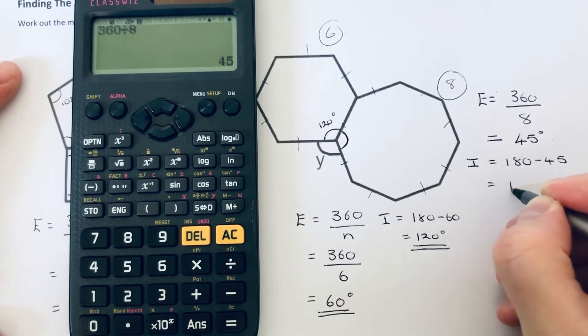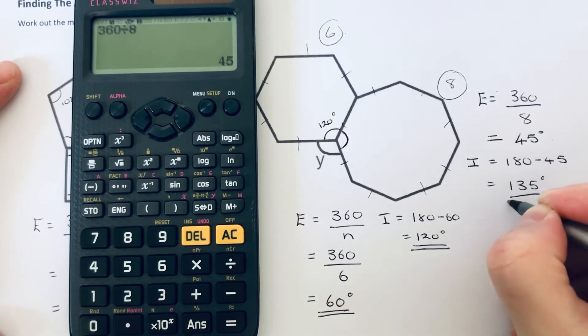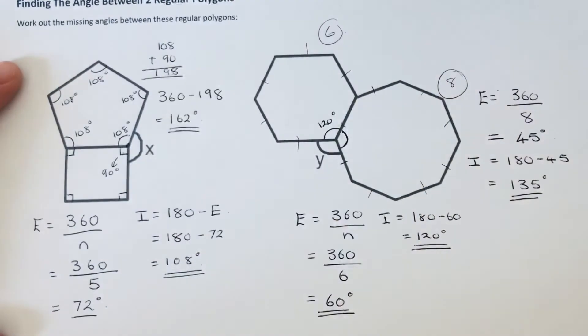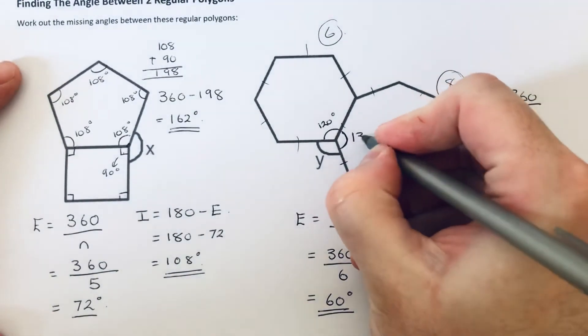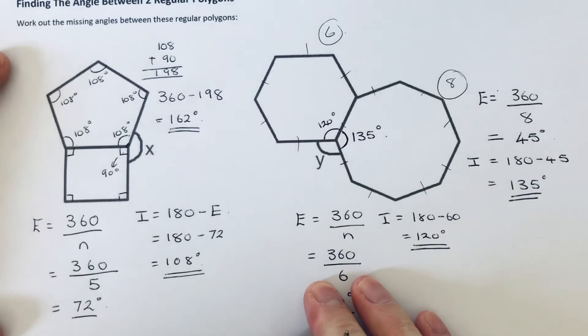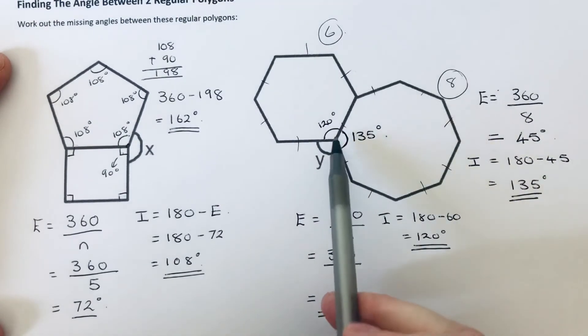Take this away from 180 to give the interior angle. So that's 135 degrees. So this angle here is 135.